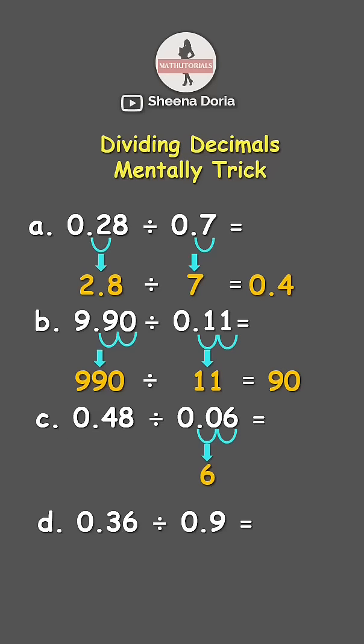And now since we move two times here, we also need to move two times in 0.48. So 0.48 becomes 48. Now 48 divided by 6 is 8.